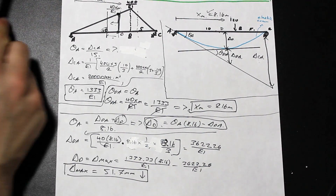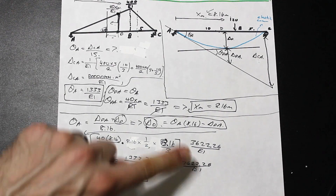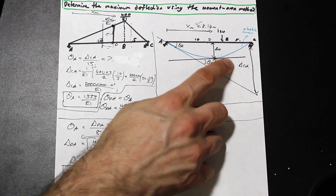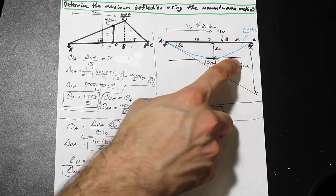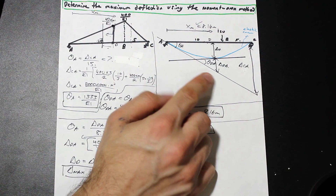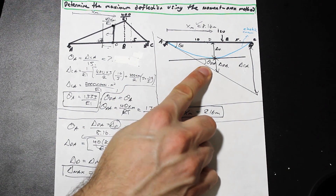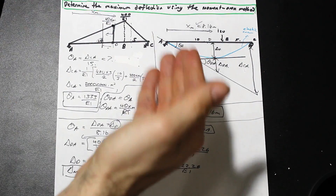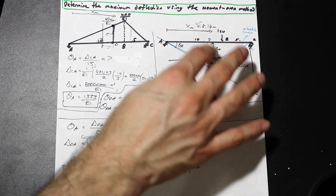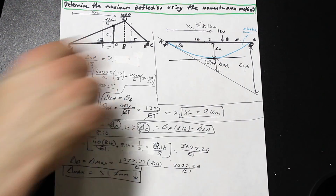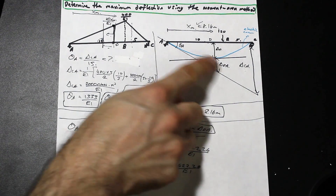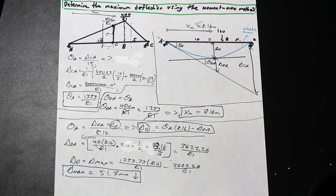That's the answer. The key insight is to take advantage of the fact that the slope at the point of maximum deflection is equal to zero. Once we know that, we can equate theta_A to theta_DA, solve for the distance to the maximum deflection, then use those quantities to solve for the deflection itself. Thanks for watching — hit the like and subscribe buttons, and let me know in the comments below.